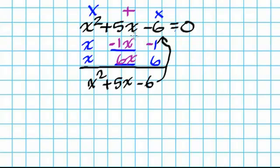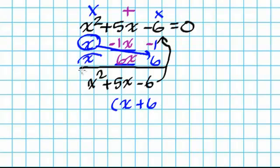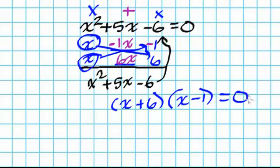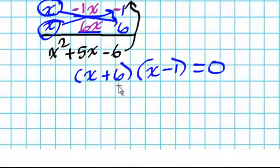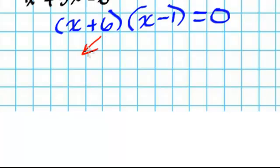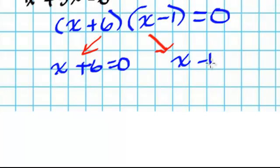So now I factor this. I have x combined with 6 — giving x plus 6 — and x combined with negative 1 — giving x minus 1. I can't forget the equal to 0. As soon as I see this equal to 0, that means I'm using the zero product property. Since I'm using the zero product property, each of these sets has to equal 0. So I write x plus 6 equals 0, and x minus 1 equals 0.